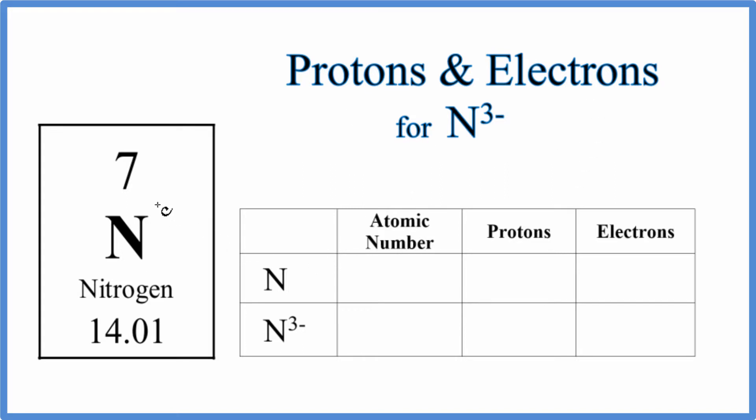The first thing we should do is look at neutral nitrogen on the periodic table. We know it's neutral because there's no negative or positive sign after it. For nitrogen on the periodic table, the atomic number is seven.